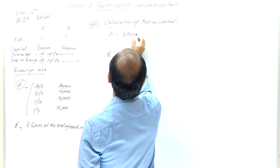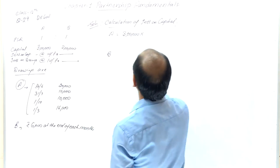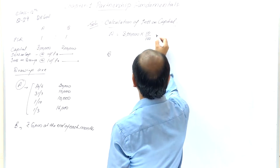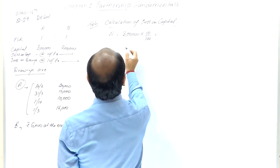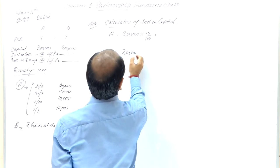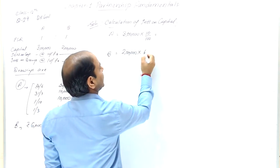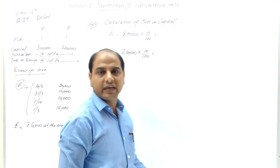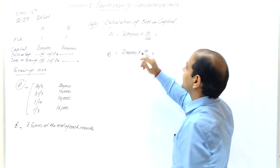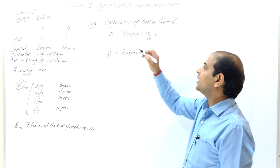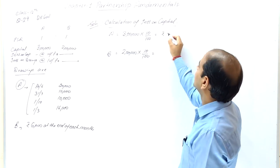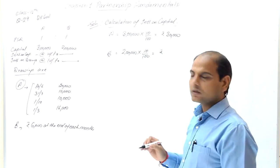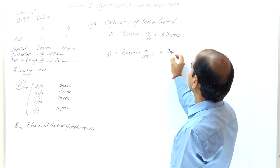Since nothing else is stated, the capital remains the same for the whole year. Rate of interest is 10%, time is full year. So interest on capital for A = ₹30,000. Similarly, B's capital is ₹2 lakh at 10% for the full year, giving interest on capital for B = ₹20,000.